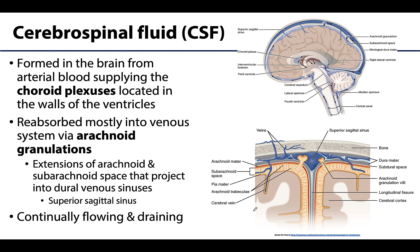CSF is formed by the choroid plexuses, which are found in the walls of all the ventricles and appear as pinkish or reddish structures in images because they are highly vascularized. It is from the choroid plexuses that CSF is secreted. The flow of CSF is proximal to distal, or superior to inferior, as it makes its way to the subarachnoid space. CSF is continually produced and replaced, meaning older CSF must be removed by being reabsorbed into the venous system.